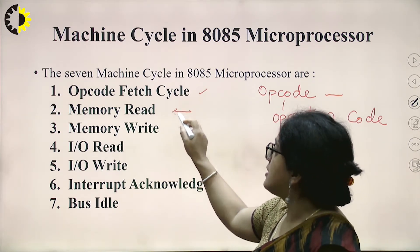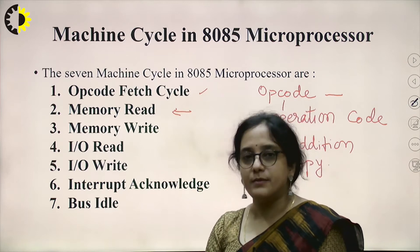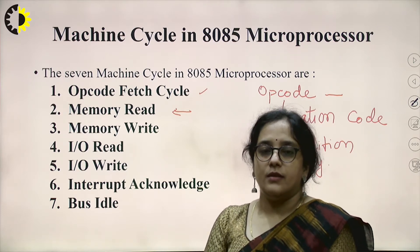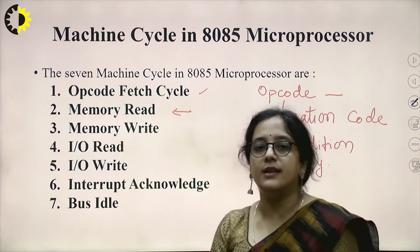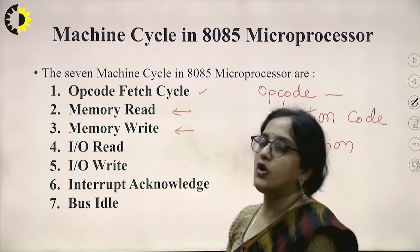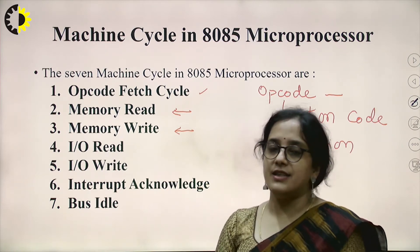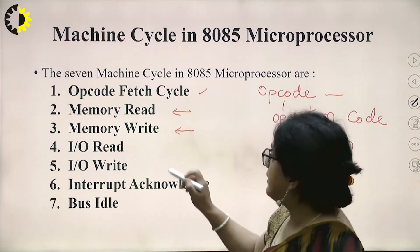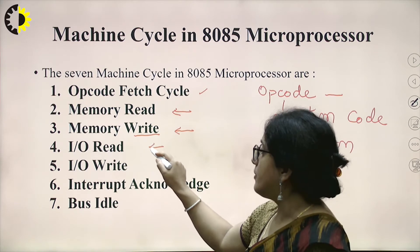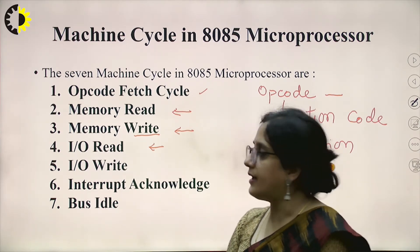The second machine cycle is memory read. In this machine cycle the microprocessor reads data from memory. The microprocessor needs the operand to perform a task, and that operand or data is either stored in memory or taken from an input device. If the microprocessor has to read data from memory, the machine operation is memory read. If we instruct the microprocessor to store the result in memory, the machine cycle memory write is performed. If the microprocessor is reading data from an input device such as a keyboard or mouse, it is an IO read operation; if writing to a monitor or printer, it is an IO write operation.